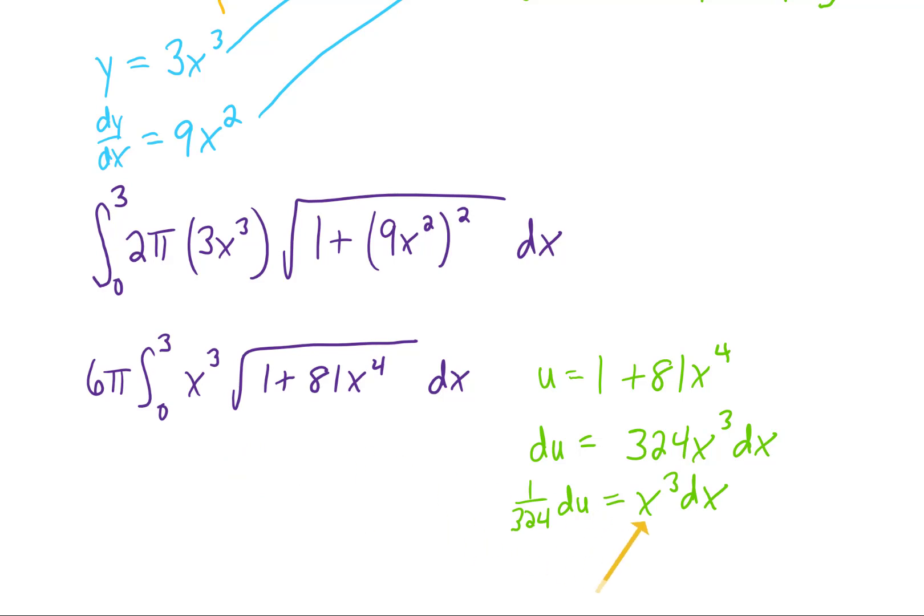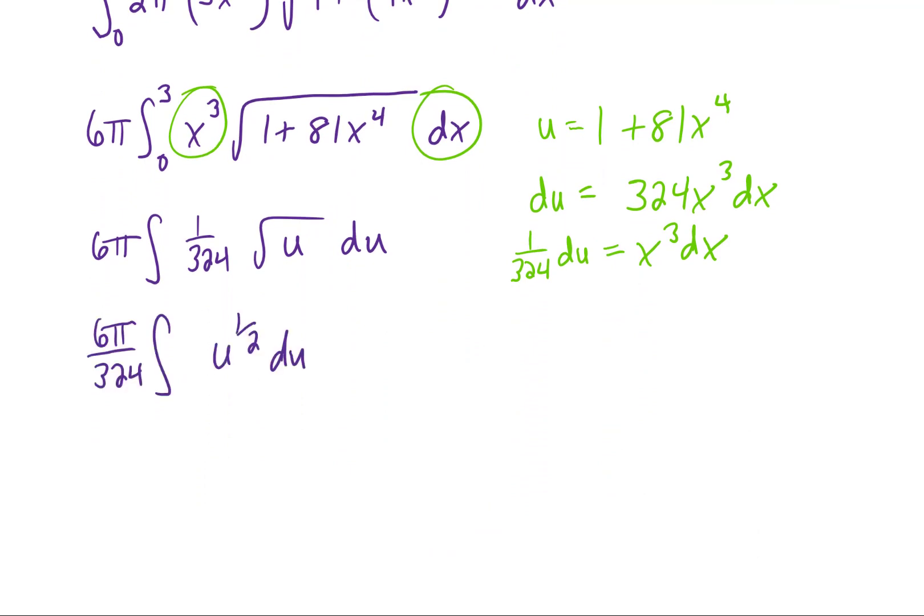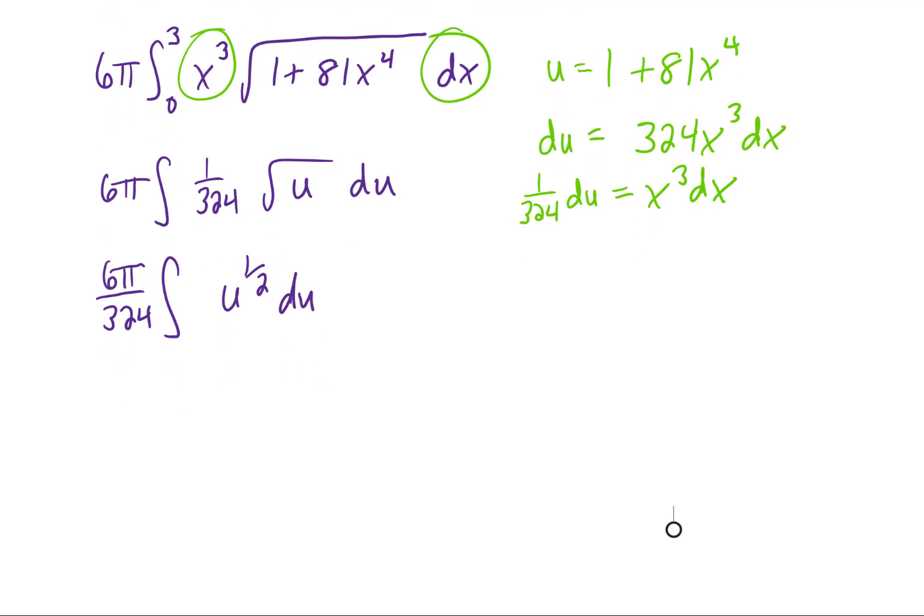In this case, I can solve x³dx for 1/324 du, meaning those two terms together give us 1/324 du. Pulling that 324 out of the integral and rewriting the square root of u as u^(1/2), we can simplify what's outside the integral. We need to remember that we had a definite integral here. The limits on x were 0 to 3.